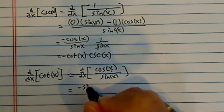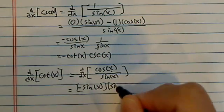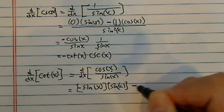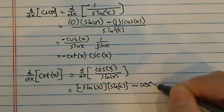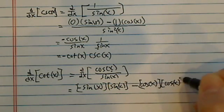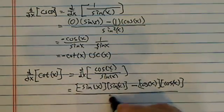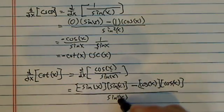Derivative of the first one, which is minus sine x. Leave the second one alone on the bottom. Minus, leave the first one alone. Take derivative of the second one, which is cosine of x. Divided by sine of x squared.